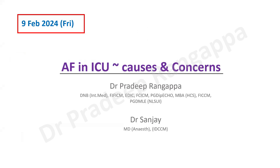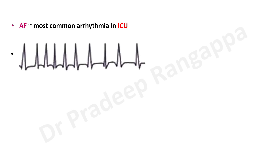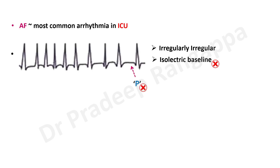If you look at all the arrhythmias in ICU, AF constitutes one of the commonest - it is the most common arrhythmia in ICU. AF looks something like this: it is irregularly irregular. These ECGs are sometimes shown in exams. It has an isoelectric baseline, no P waves - P waves would be absent - and the QRS will be narrow complex, less than 120 milliseconds.